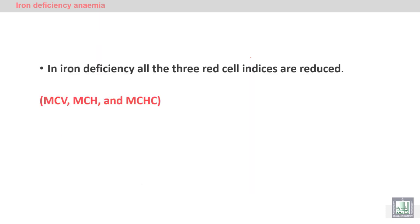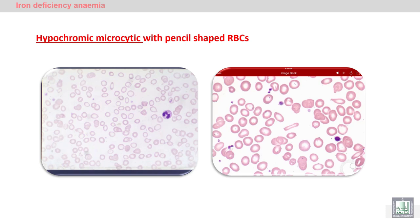In iron deficiency anemia, all red blood cell indices — MCV, MCH, and MCHC — are reduced. On the peripheral blood film, we can see microcytic red blood cells, very small red blood cells. They are also hypochromic — decreased hemoglobin — where the central pallor is larger than the hemoglobin in the periphery. A characteristic cell in iron deficiency anemia is the pencil-shaped red blood cell.